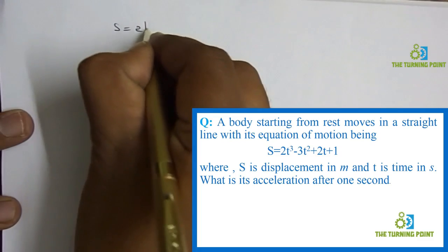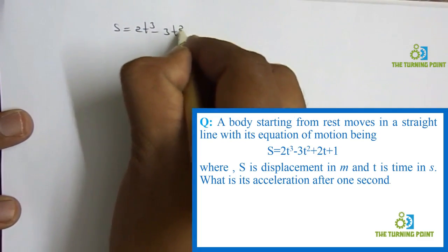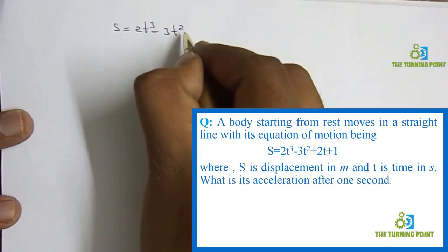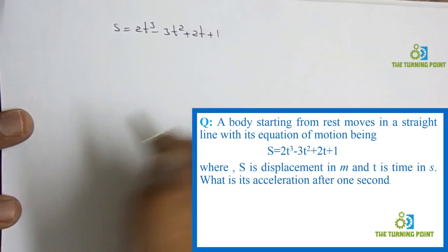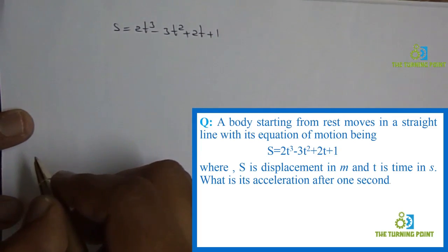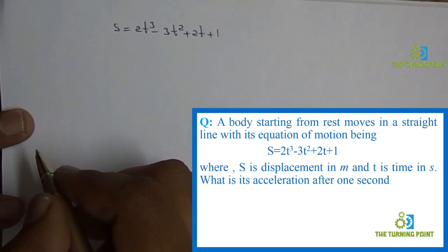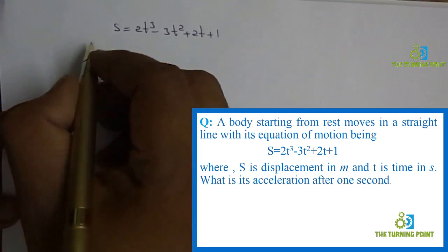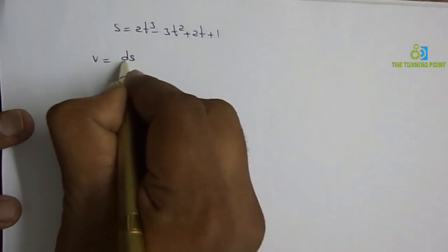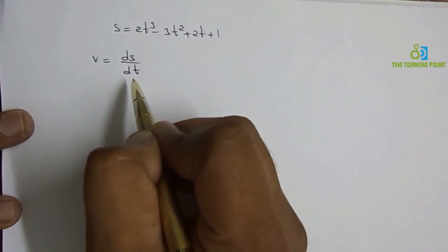S is equal to 2t cubed minus 3t squared plus 2t plus 1 is the given equation. You are supposed to calculate the acceleration value after one second. If you know the relation between displacement and acceleration, you can solve this. Velocity is nothing but the rate of change of displacement, so if I differentiate this equation with respect to time, I will get the velocity equation.